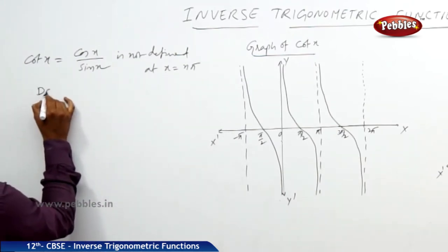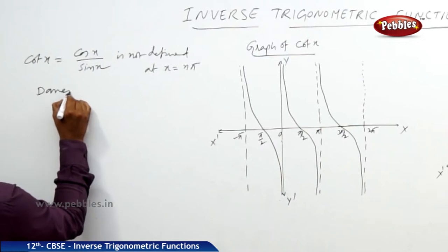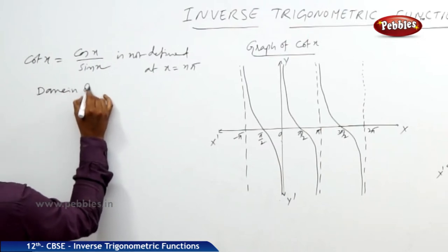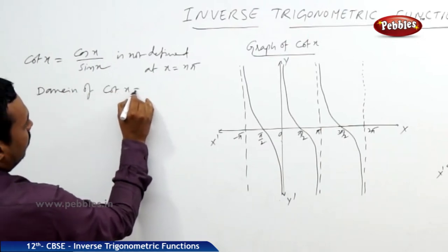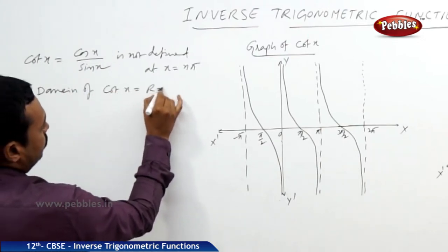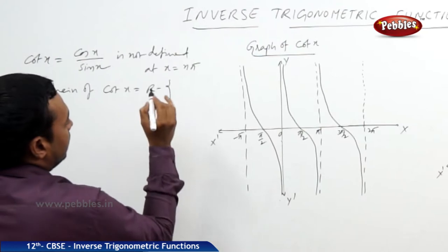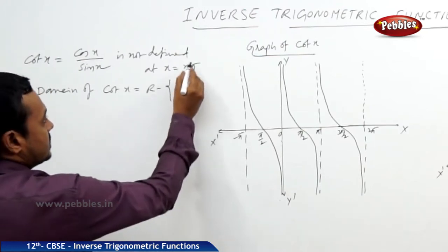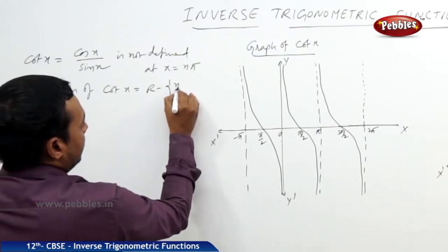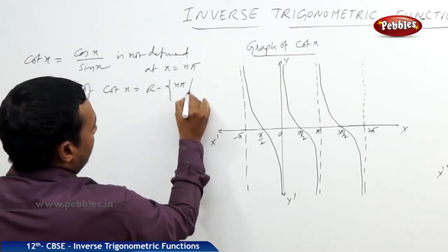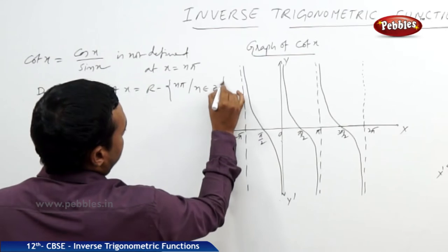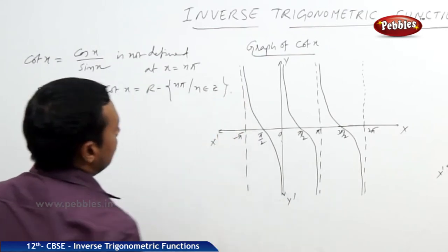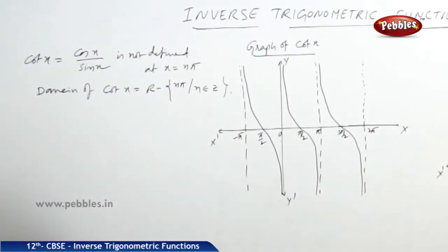Therefore, the domain of cot x is the set of all real numbers except n pi, where n belongs to Z, the set of integers.